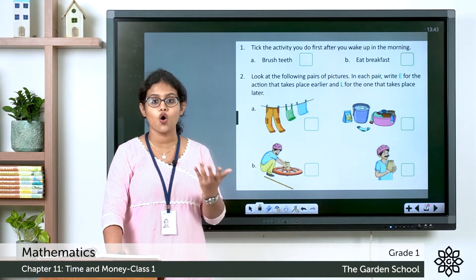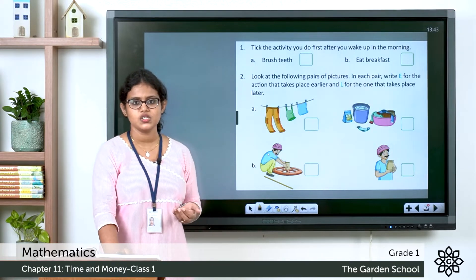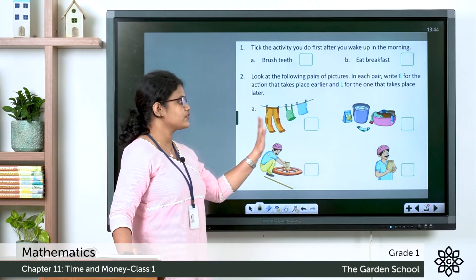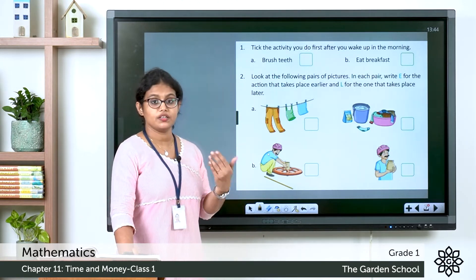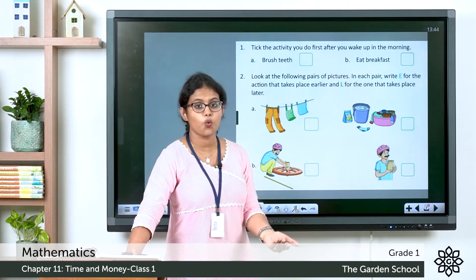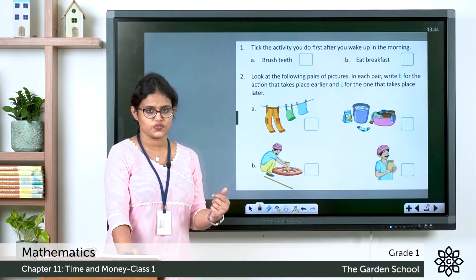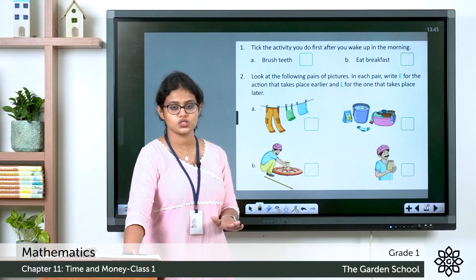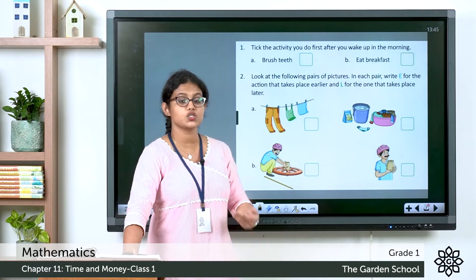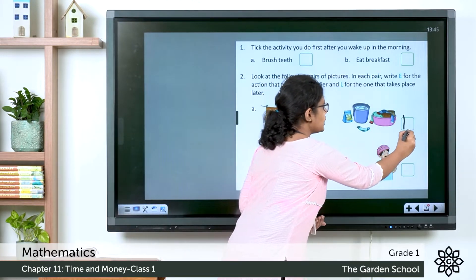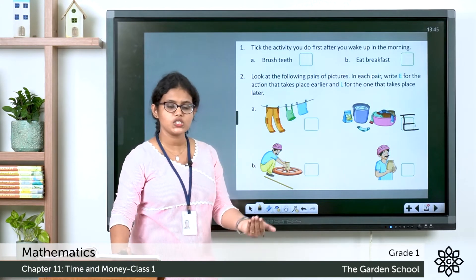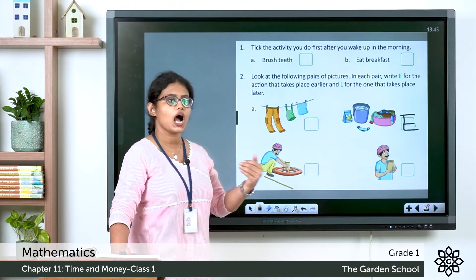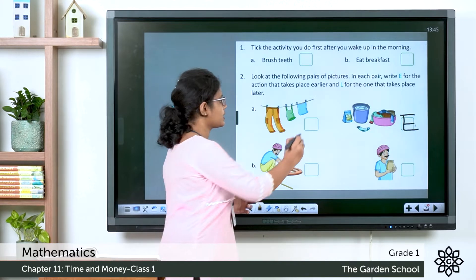We do different things in a step-by-step order. Things that we do first, we can say earlier; and the things after that, we can say later. See the first pair: you can see clothes being dried, and clothes for washing. Which step happens first? First you wash the clothes using washing powder and water — that happens earlier, so write E. Once you're done washing, you dry the clothes — that happens later, so write L.